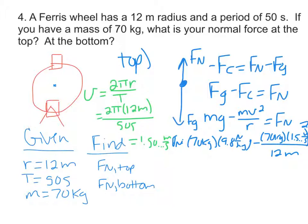Multiplying all of this out, we should get 672.73 keeps on going newtons equals the normal force at the top. Only one sig fig, so Fn is approximately equal to 700 newtons.